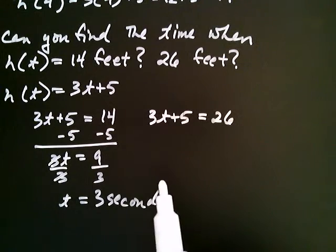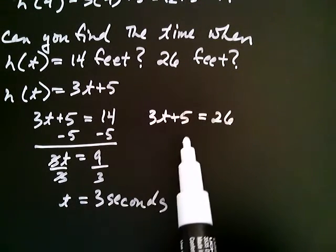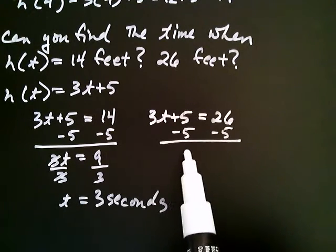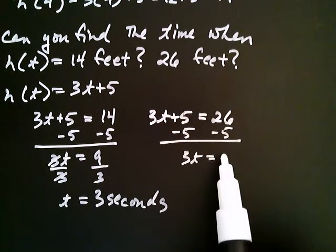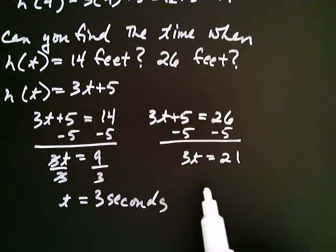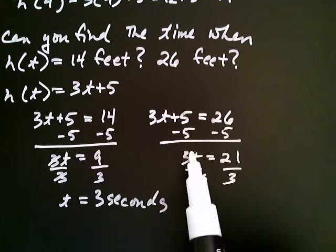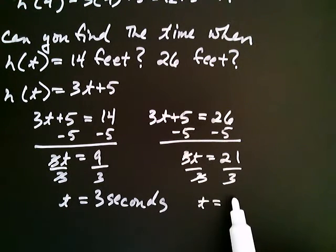What could that time be? I'm not sure. Well, I know how to solve this equation, so I subtract five from both sides, and the left-hand side is 3t equals 21. Now if I divide both sides by that three, I find that the time, in that case, is seven seconds.